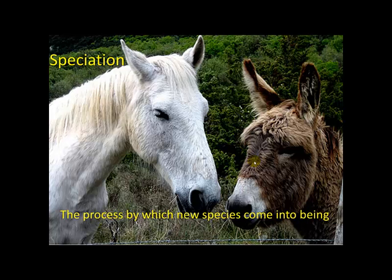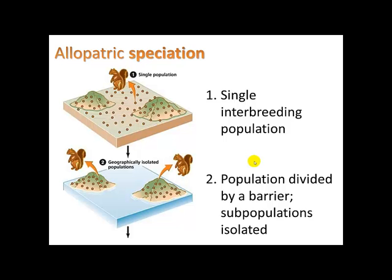Speciation is the process by which new species come into being through natural selection. A special kind is allopatric speciation, which results from geographic or geologic events. For example, a single interbreeding population of squirrels — if flooding occurred creating two islands, these populations are now isolated. As each population goes through genetic mutations, they may become so different that squirrel A and squirrel B can no longer interbreed, and we would now say they are separate species.